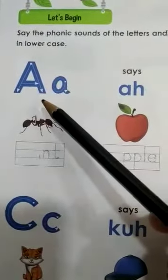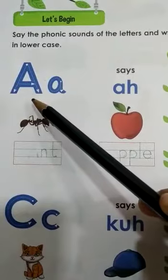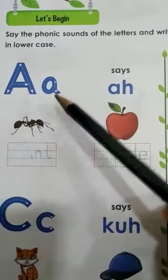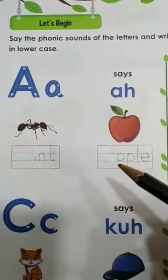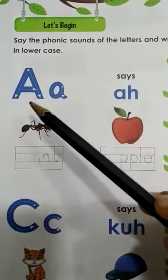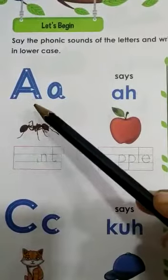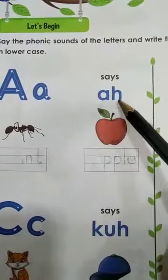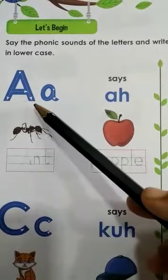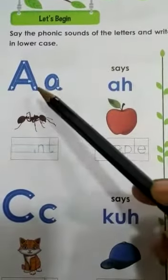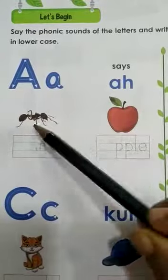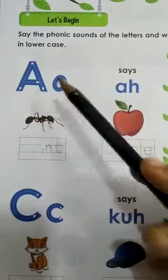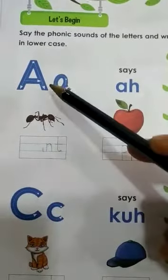So, here the first letter of the alphabet — which is it? A. This is capital letter A and this is small letter A. Do you know what sound A represents? What is the phonic sound of A? A says A. And what are the pictures given over here? There is an ant and an apple. Ant starts with letter A and apple also starts with letter A.